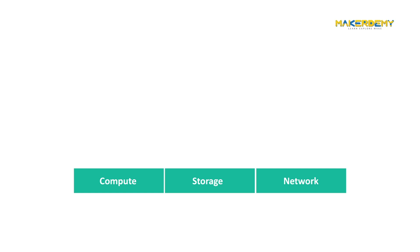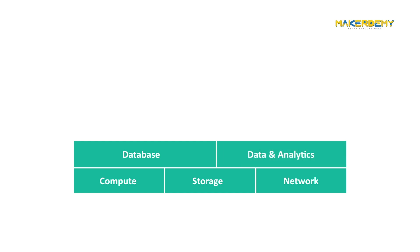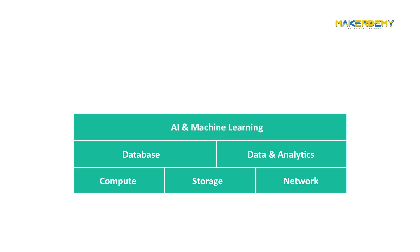On top of these core fundamental building blocks, we have additional services like Databases, which includes both NoSQL and Relational Databases. This is followed by a set of data and analytics services that offer business intelligence and data warehousing in the cloud. Google is the top among the three platforms in the area of AI and machine learning, so the next layer is AI and ML. Google Cloud Platform provides some very advanced services and infrastructure for AI and ML.